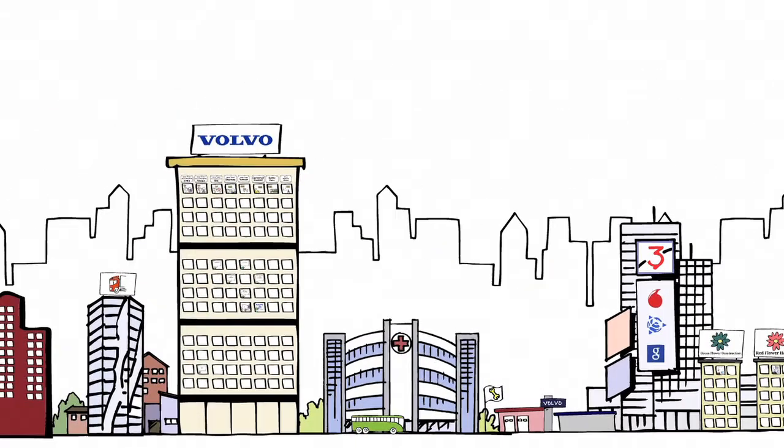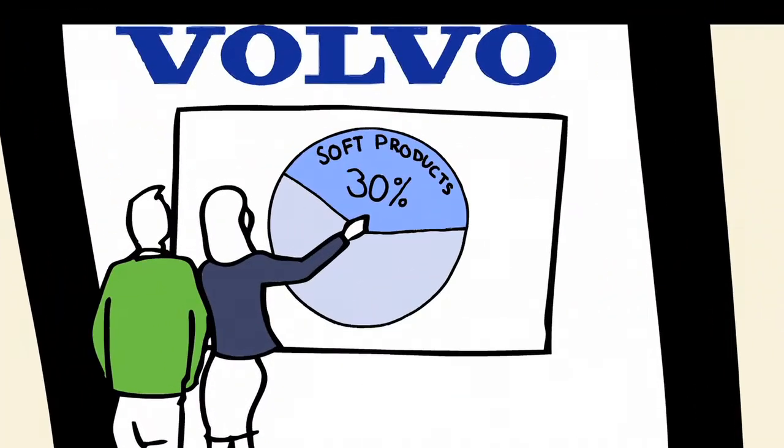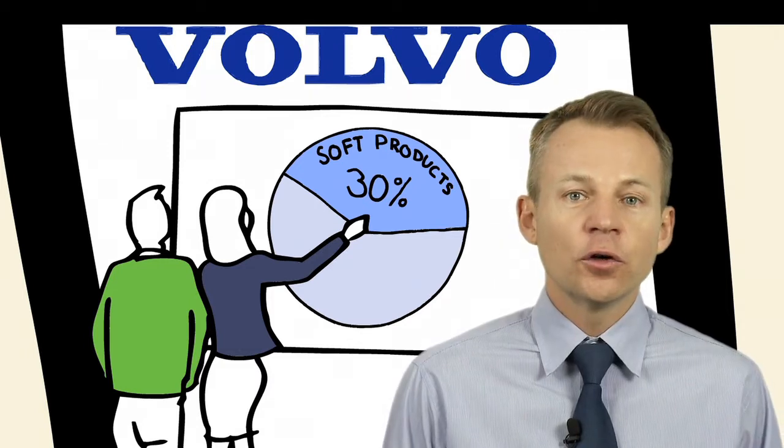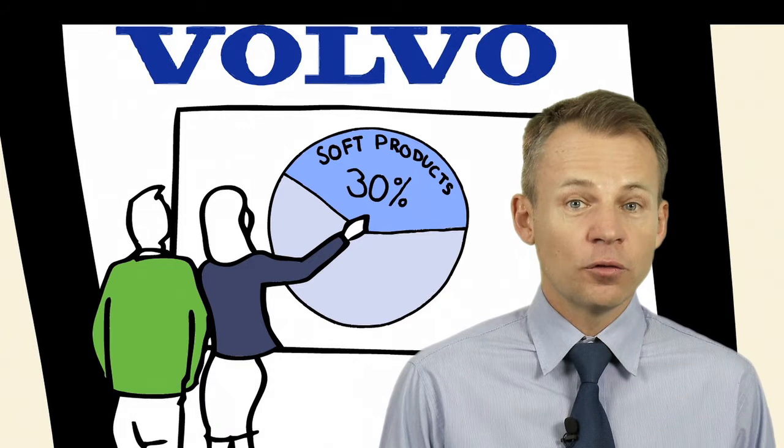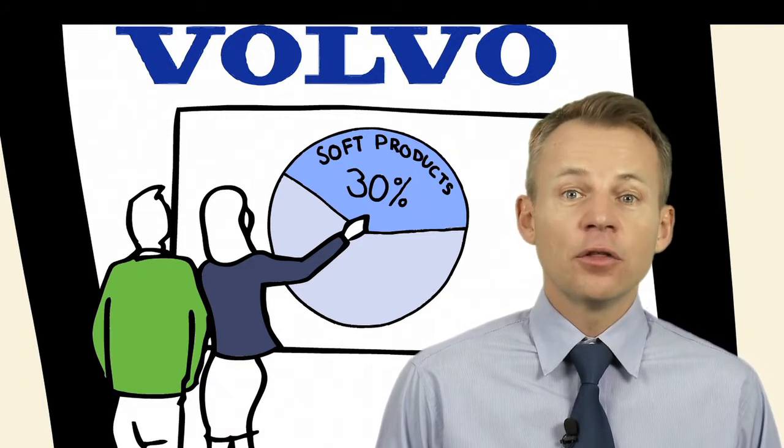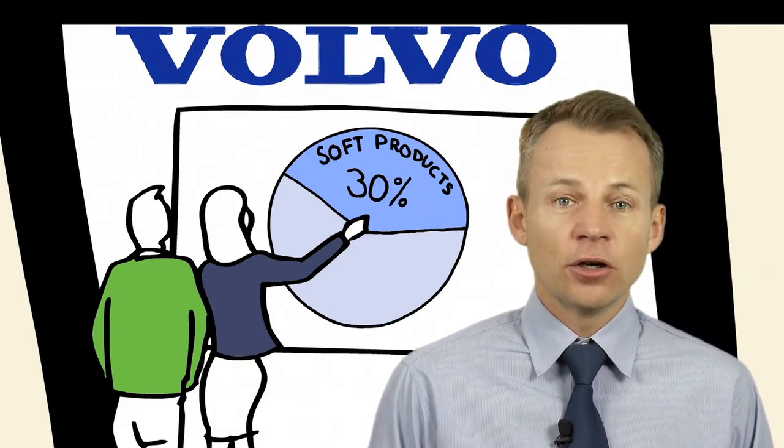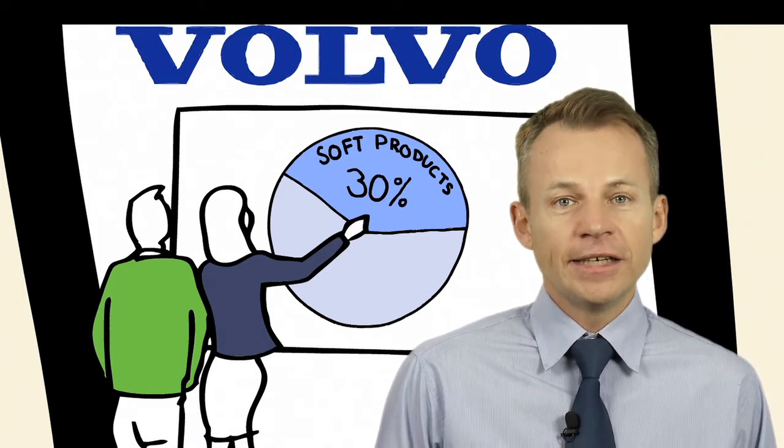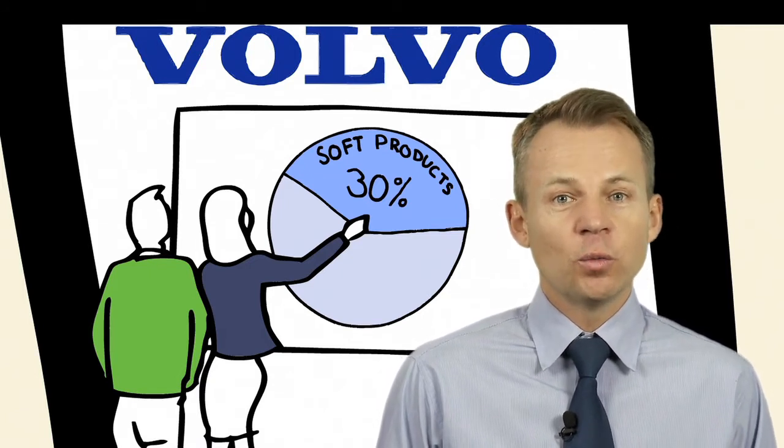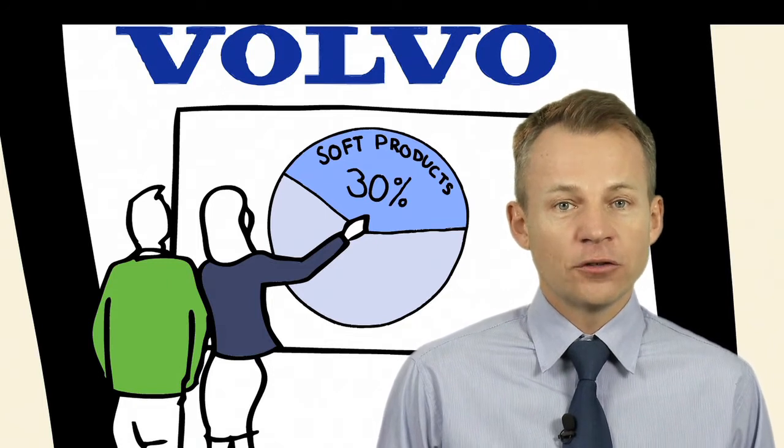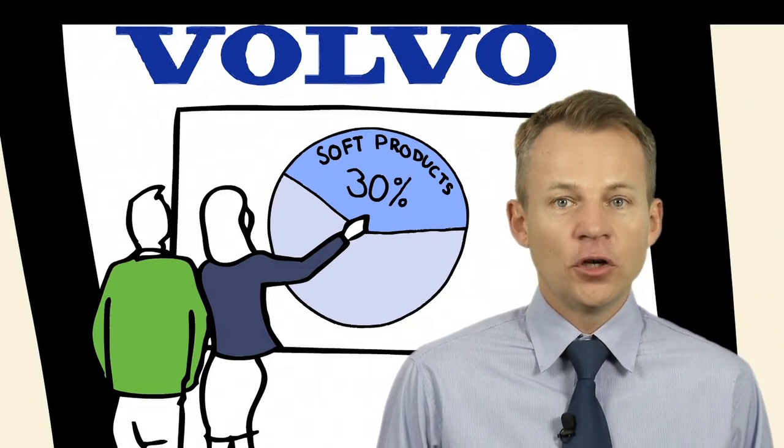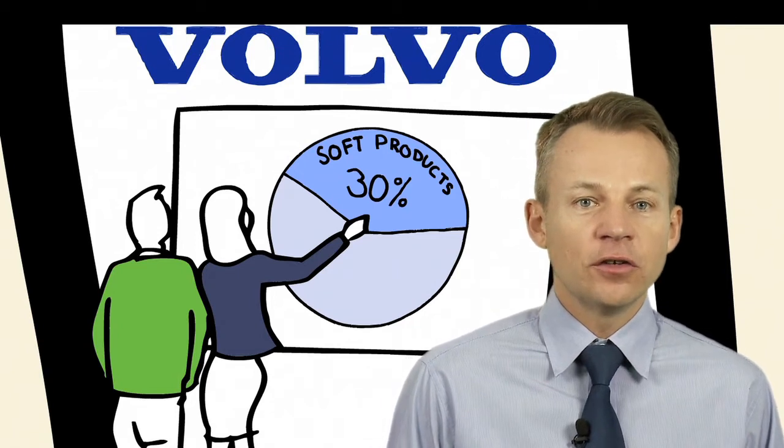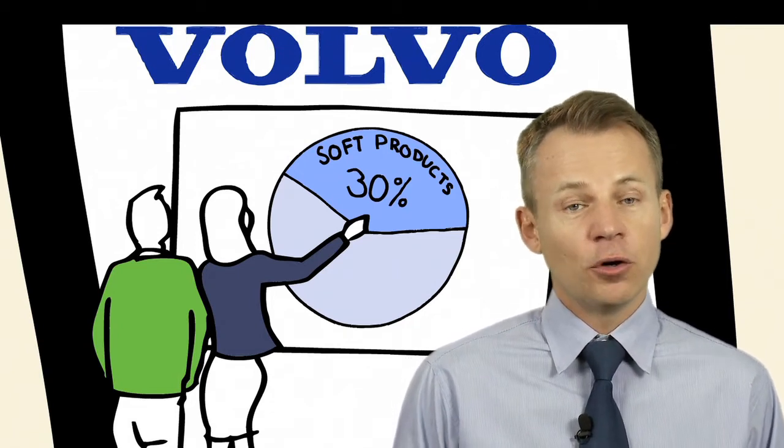In another part of the city sits Volvo soft product planners planning how to grow the business. The turnover of soft products after-market offerings is today approximately 30 percent but a large portion is spare parts. One idea that came up a few years ago was to have all products connected like an embedded iPhone. Volvo could provide connected services together with customers and partners.